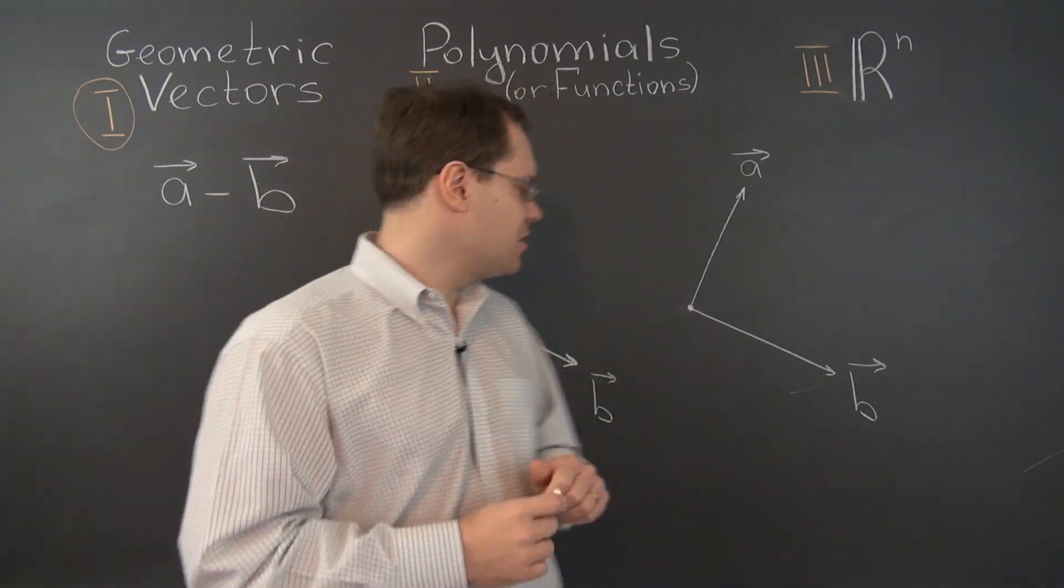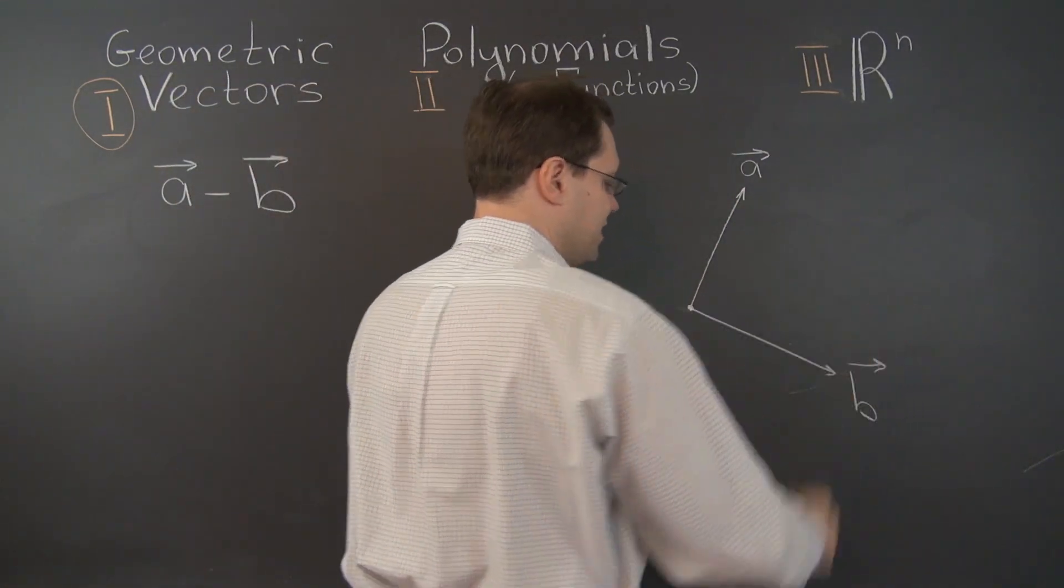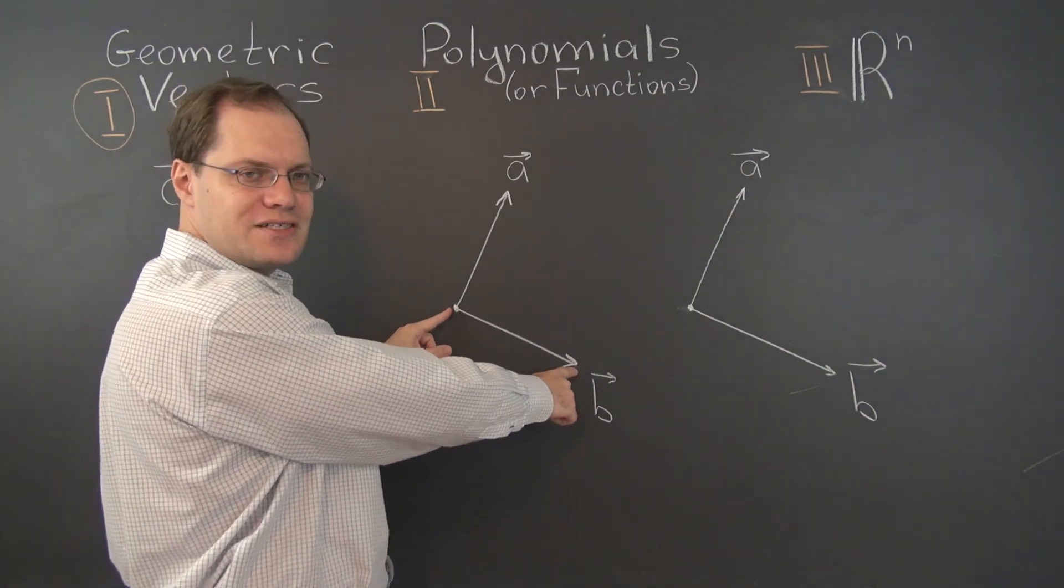Let's use the tip-to-tail rule. Well here's the vector B, so we'll do one approach here and the other one here. We should get the same answer in both cases. Well, where were we? Here's the vector B.